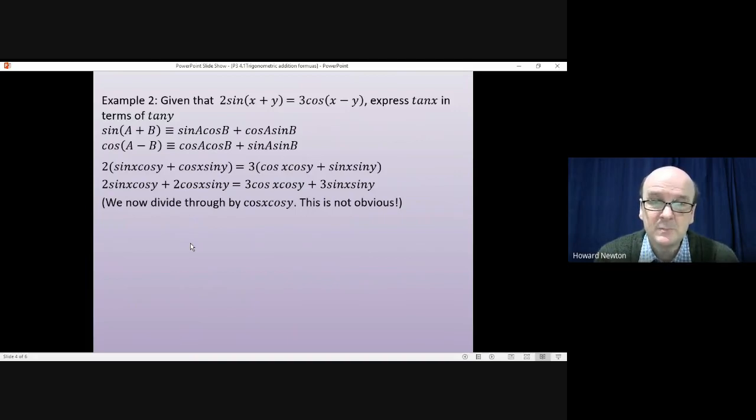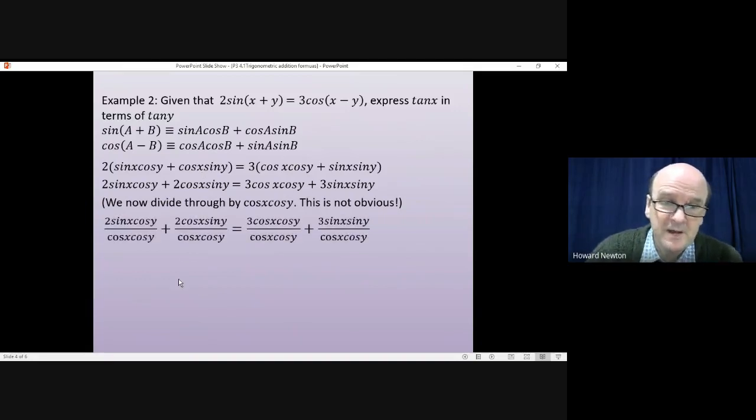But the best thing to do at this point is to divide through the whole equation by cos x times cos y. And the reason why we do that becomes obvious once we've done it. It's not particularly obvious before we do it. So divide every single term by cos x times cos y. And the reason why we do that is various things happen, all of which are useful. These cos y's will cancel with each other. These cos x's will cancel with each other. Both cos x and cos y cancel in the third term. And in this final term, nothing cancels, but we do get sin x divided by cos x, and sin y divided by cos y. And those will change to tan x and tan y.